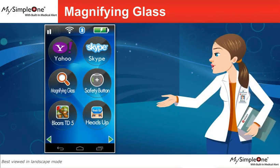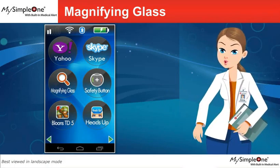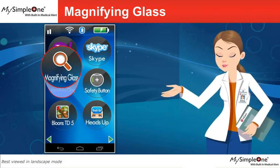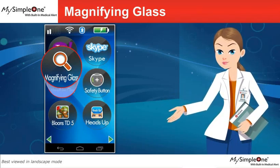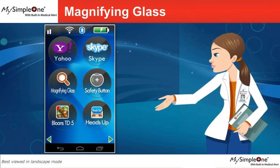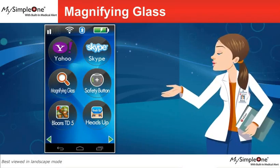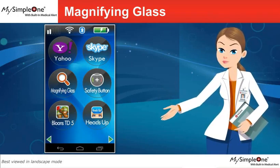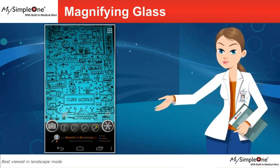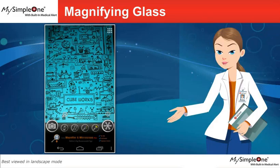Your My Simple One smartphone also comes with a magnifying glass application installed. This application turns your smartphone into a digital magnifying glass. Tap on the magnifying glass button to open the application.